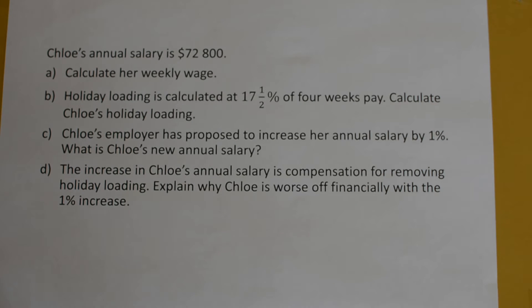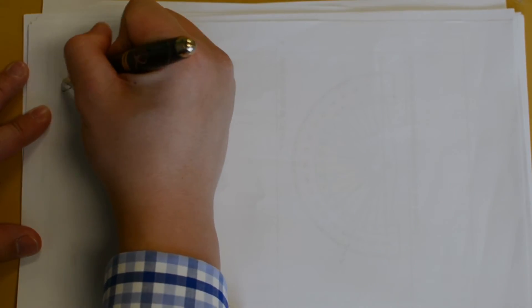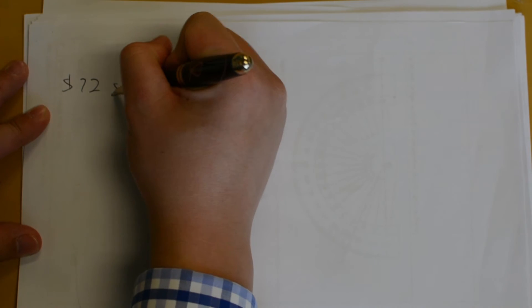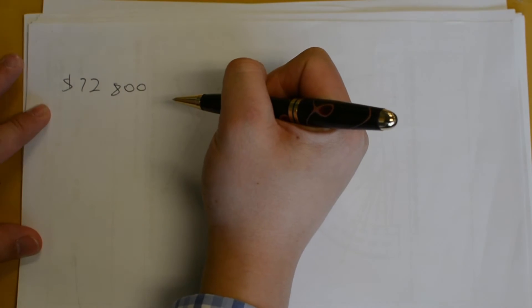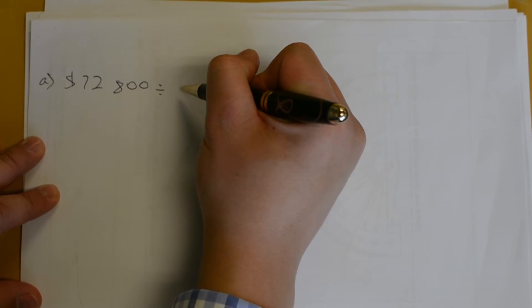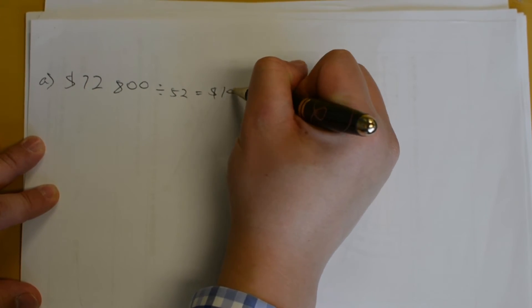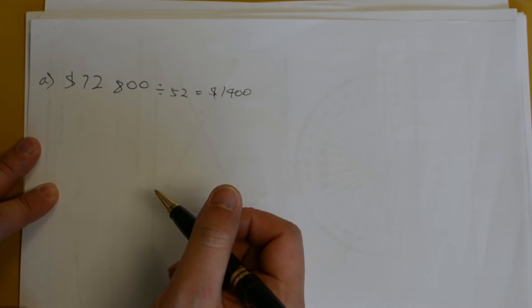Chloe's annual salary is $72,800. Calculate her weekly wage. If we have $72,800, that's her annual salary, so to calculate weekly, there are 52 weeks in a year, so we are going to divide by 52, and we end up with $1,400 per week.